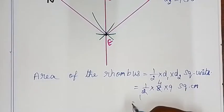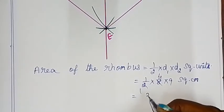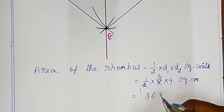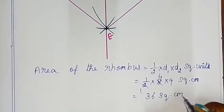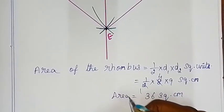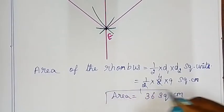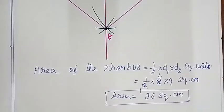This is the required area of the given rhombus NEST. Now Example 5.37: Construct a rhombus with given measurements. Also find the area.